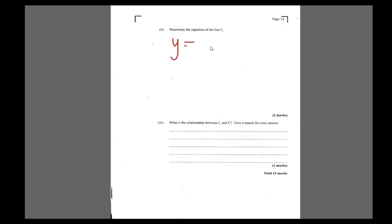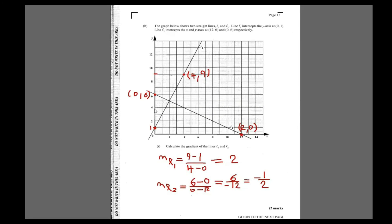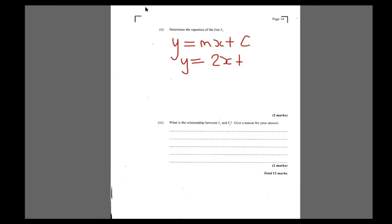Now determine the equation of line L1. Using y = mx + c, the gradient m = 2, and L1 cuts the y-axis at 1, so c = 1. Therefore the equation of L1 is y = 2x + 1.